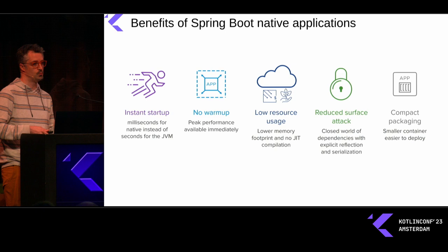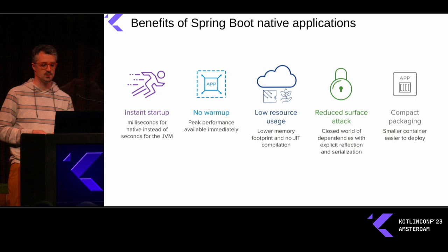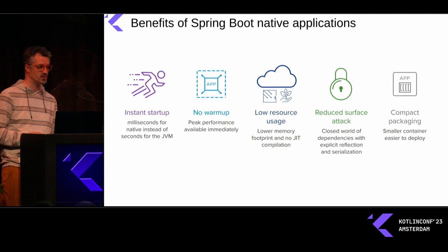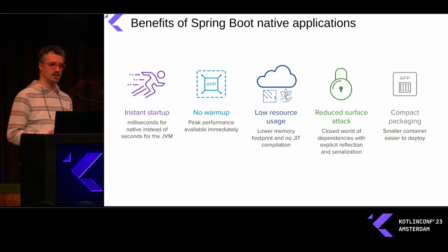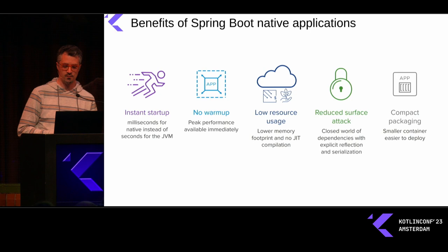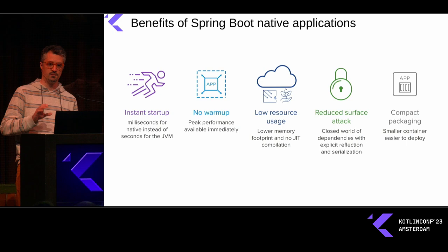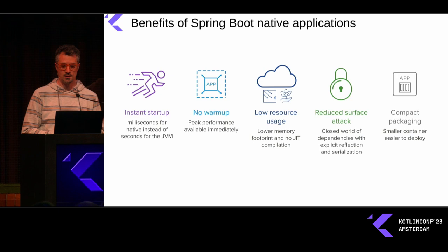The benefits of this approach are: almost instant startup — milliseconds instead of seconds. No warm-up: the JVM needs a powerful CPU to warm up the JIT, but here peak performance is available immediately since JIT is done at build time. Low resource usage — you don't need all the JVM infrastructure, so smaller instances, smaller CPU and lower memory. And reduced attack surface: with GraalVM you must anticipate all reflective calls, serialization, and resources at build time; the advantage is that at runtime you can't invoke a reflection call that hasn't been expected — everything is closed world. If there is a security issue, native is more secure than the regular JVM. And you get compact packaging with smaller containers.